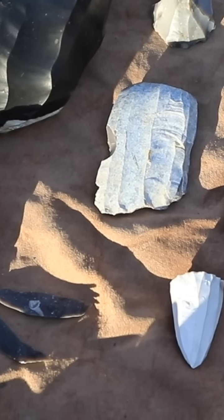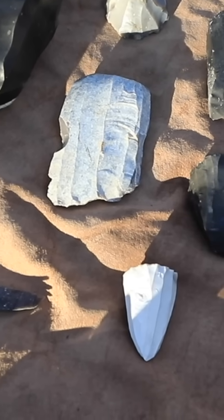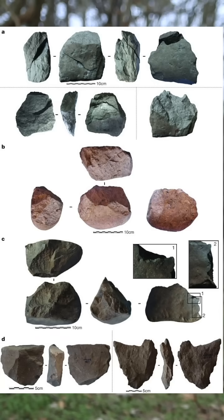The earliest kinds of core and flake technology come from 3.3 million years ago — the oldest stone tools — but they were just very simple flakes that were detached from a core. Very different to blade cores, but the story has to start somewhere.